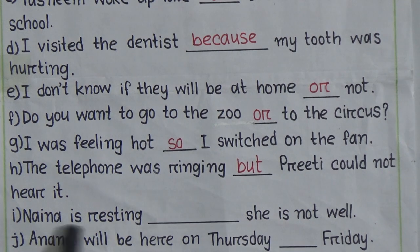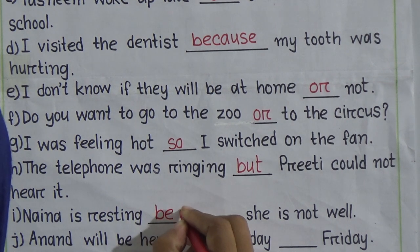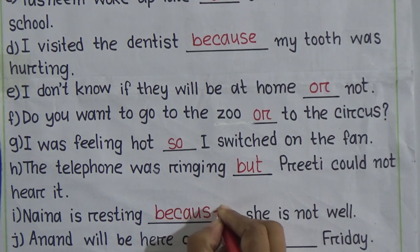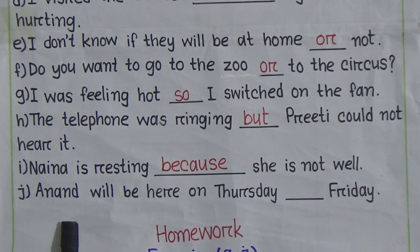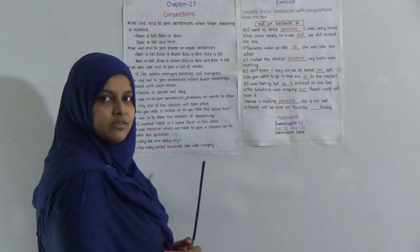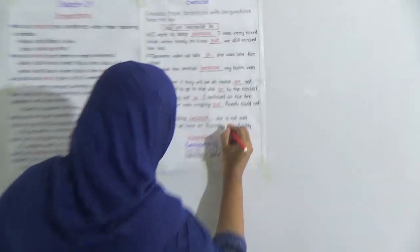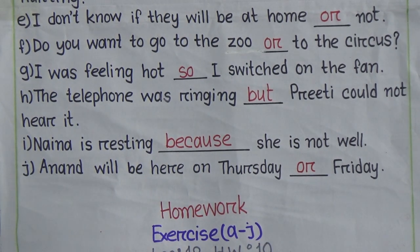Number i: 'Nana is resting ___ she is not well.' Why is Nana resting? Because she is not well. The answer is 'because': 'Nana is resting because she is not well.' Number j: 'Anand will be here on Thursday ___ Friday.' We don't know when - Thursday or Friday - so we use 'or': 'Anand will be here on Thursday or Friday.'